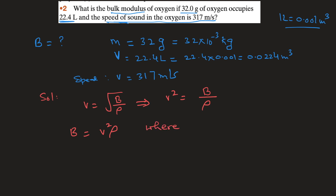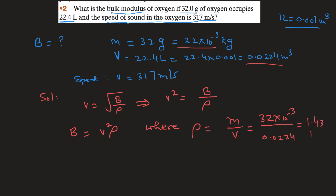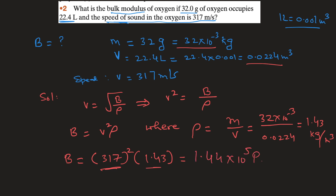Density rho equals mass divided by volume: 32 × 10⁻³ divided by 0.0224, which gives 1.43 kg/m³. Therefore, the bulk modulus B = v² × rho = 317² × 1.43. Solving this gives 1.44 × 10⁵ Pascals. Pascal is the unit of bulk modulus.